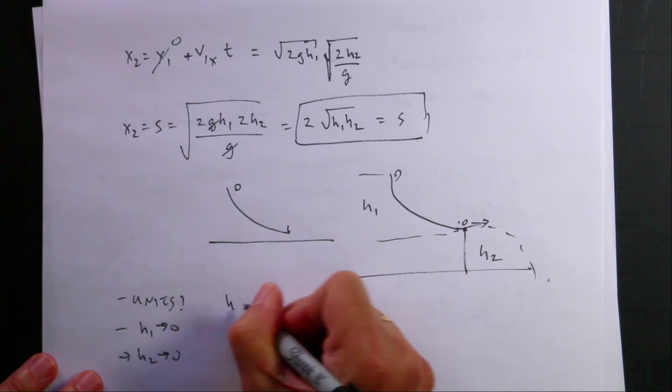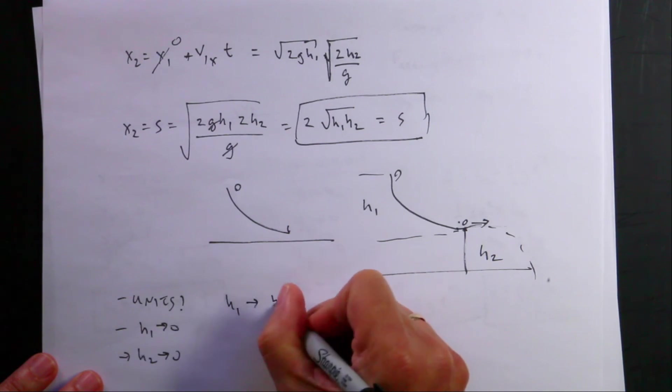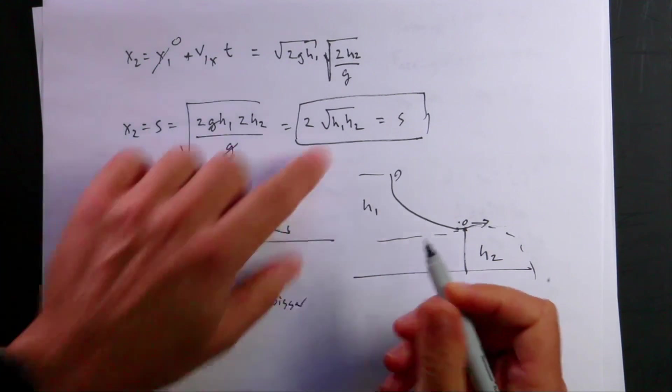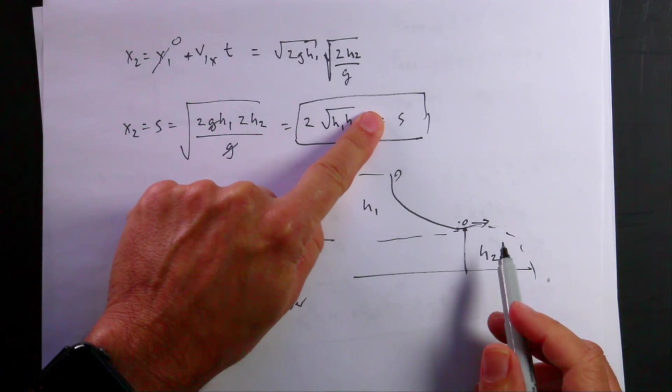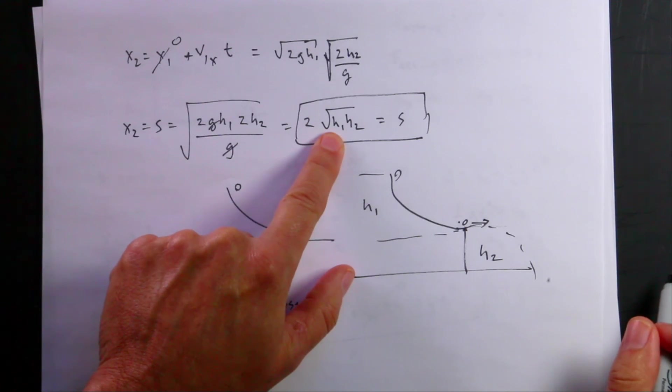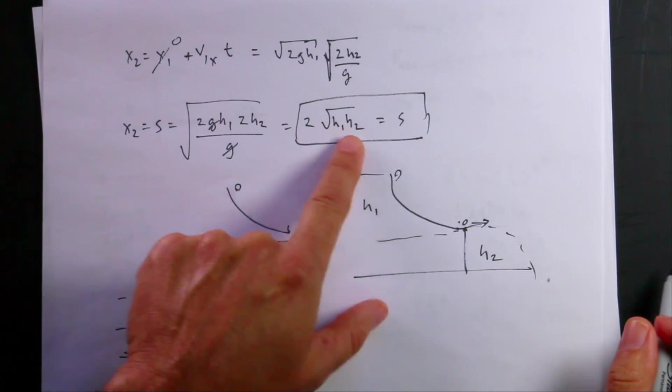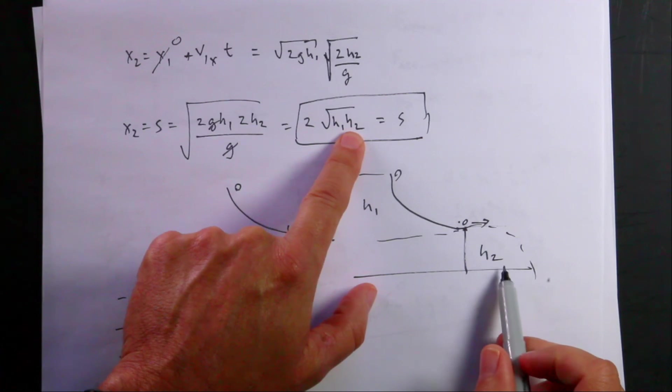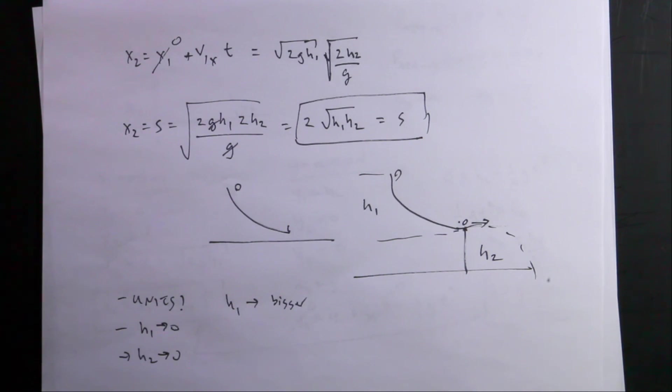What about as h1 gets bigger? If I increase the value of h1, then it should start higher up and it should go further. And so that's what this says too, right? If I increase h1, s does get bigger. Also, if I increase h2, it should get bigger. So the answer seems to make sense. I don't see anything wrong with the answer, which doesn't mean it's right. But I don't see anything that's wrong.